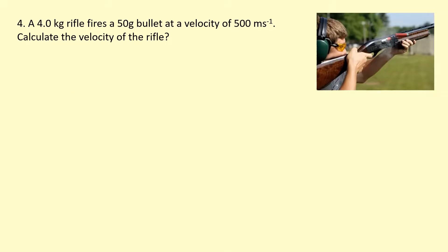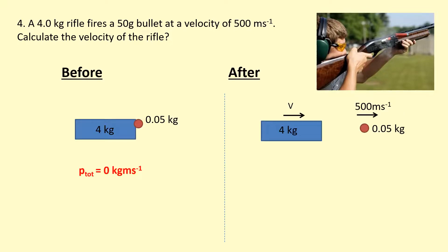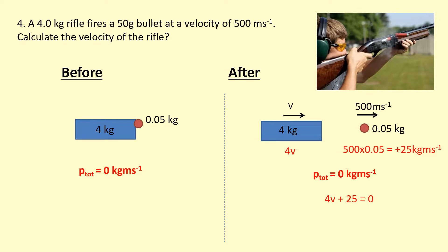Here's another typical question. We've got a gun being fired with a bullet inside it. The bullet and the gun were initially stationary, so the total momentum before was 0. The bullet goes towards the right at a really high speed, and for momentum to be conserved, the gun has to recoil — it has to go backwards. The total momentum before was 0, so total momentum must equal 0 afterwards. The bullet has 25 kilogram meters per second towards the right, and the expression for the gun is 4 times its unknown velocity. Adding those two together must equal 0. Rearranging, we find the velocity of the gun is minus 6.3 meters per second — it's going towards the left, it's recoiling, and momentum is conserved.